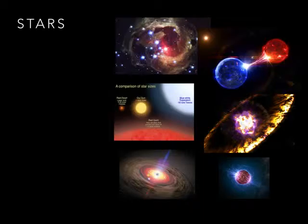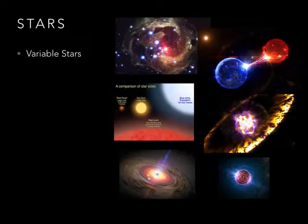That was stuff they study in the solar system, but they also study stars. This first type is called variable stars. Has anybody heard of variable stars? They get really bright, and then they get really dim, and then bright and dim again. People want to understand why they do that.